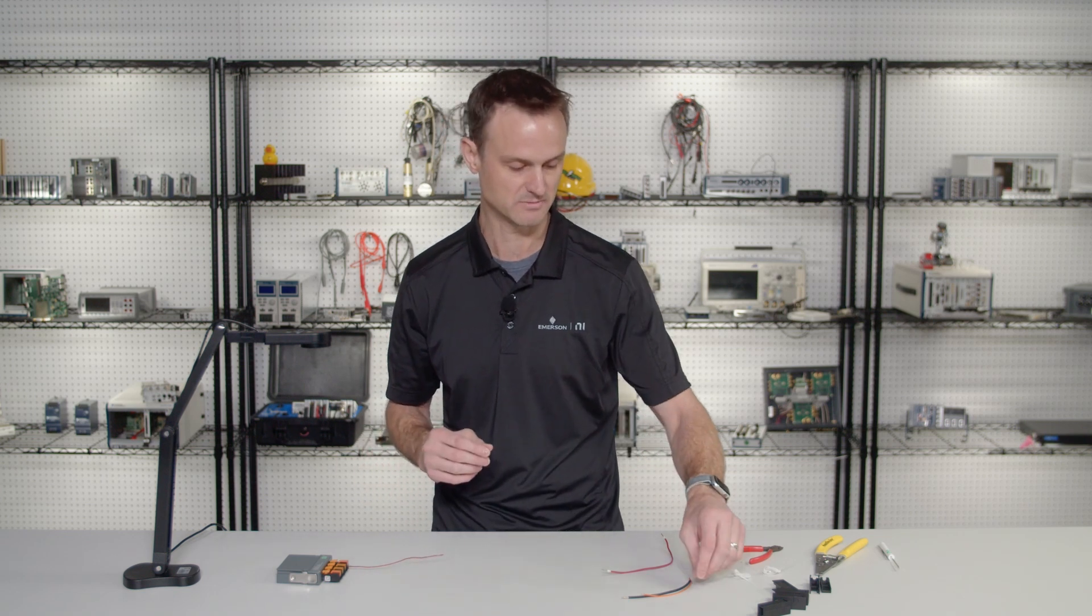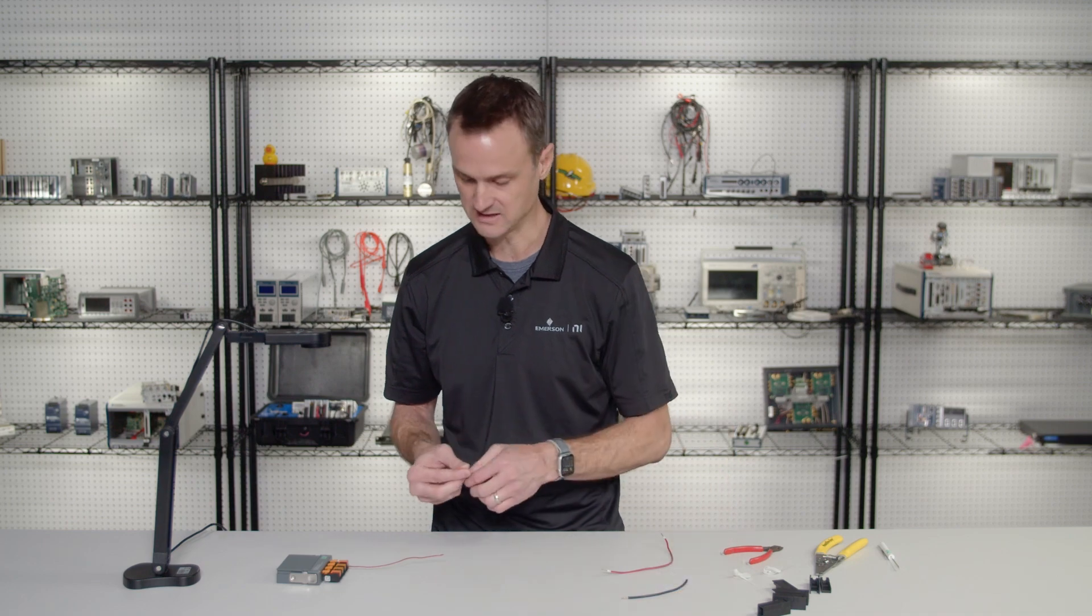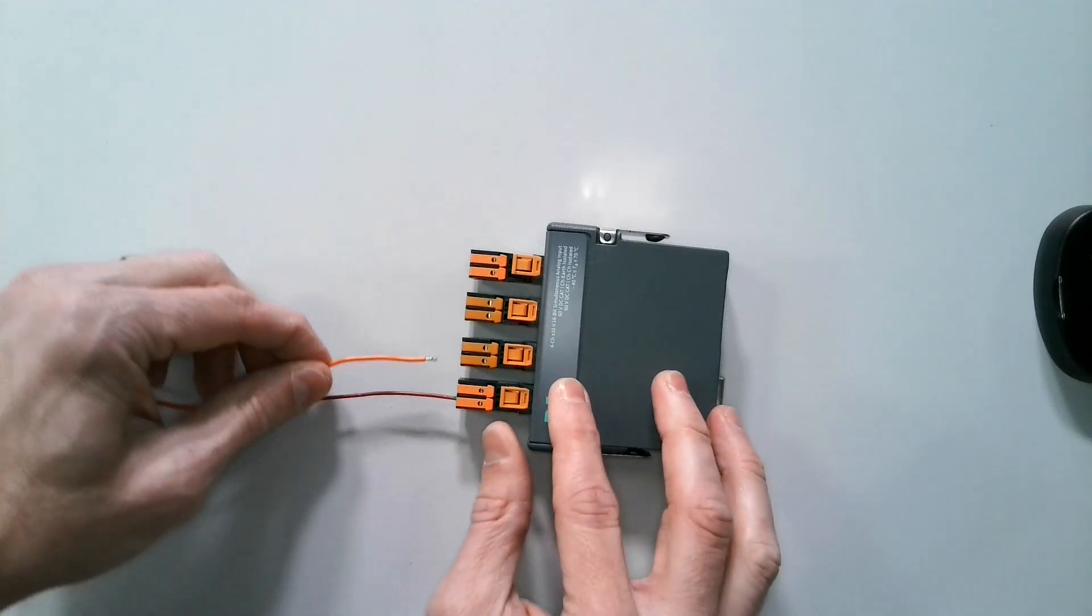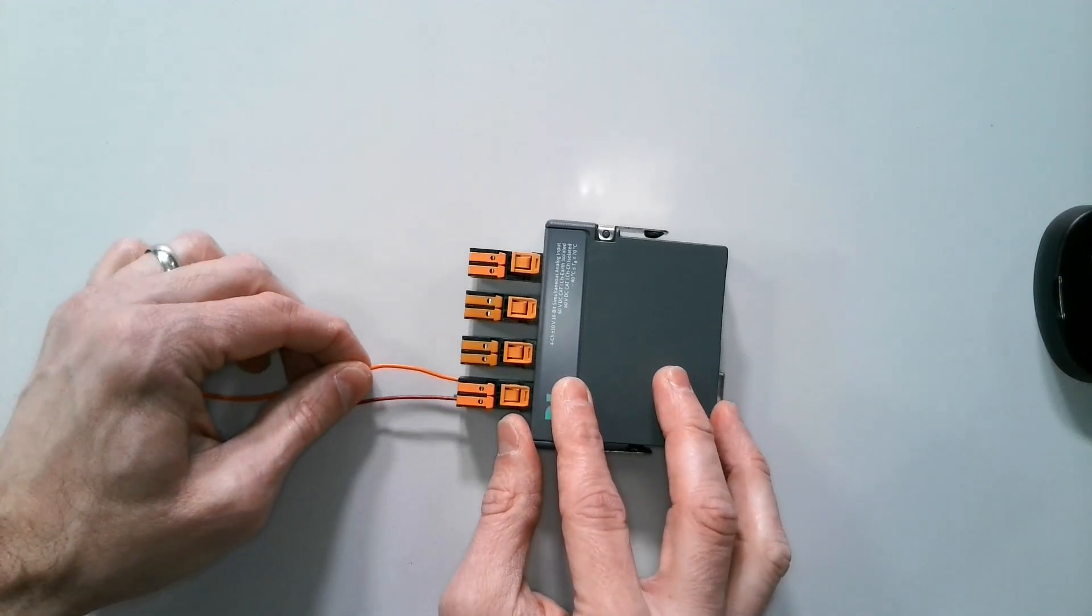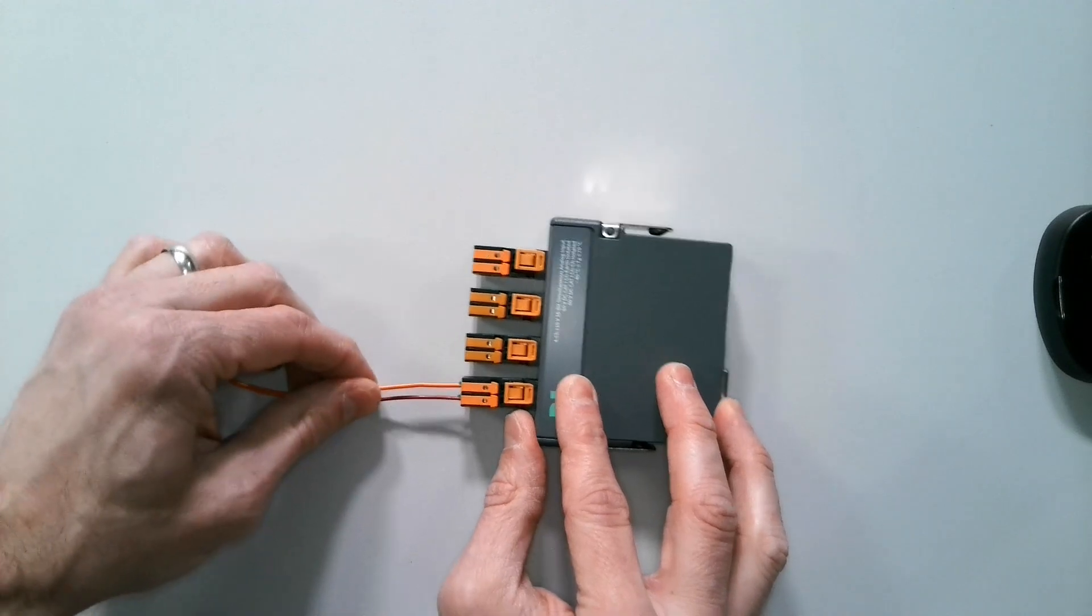Here let me show you some other wires. That was a solid core wire. Here's a kind of a medium-sized stranded wire. Click, it's just that easy.